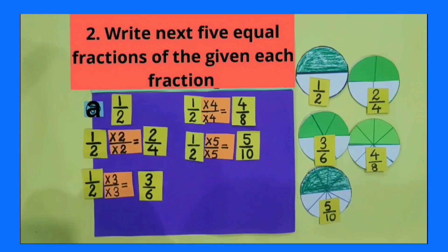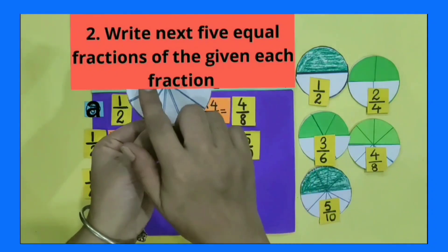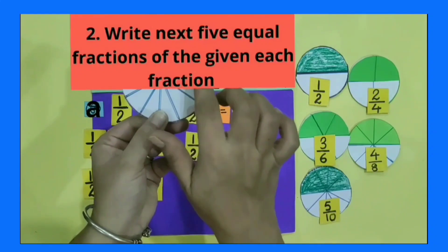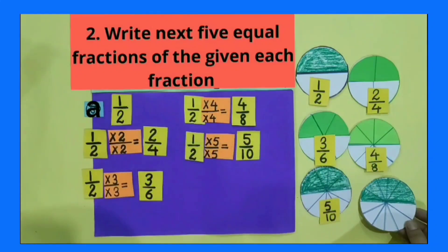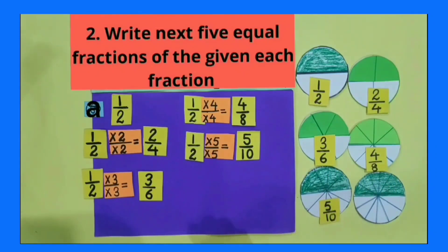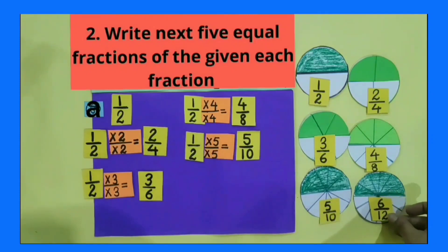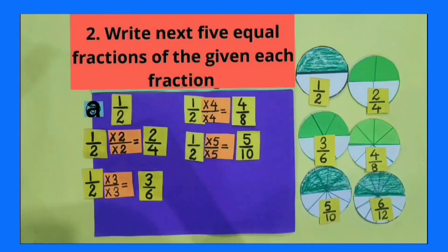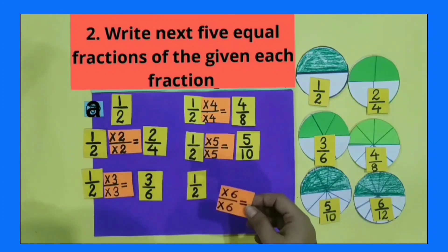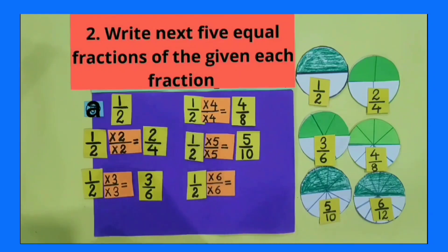I have a circular shape which is divided into 12 equal parts, and out of 12 equal parts, 6 parts are colored. Again compare all these shapes — are these shapes equivalent to each other? Yes, all the shapes are equivalent to each other. 6 parts out of 12 equal parts means 6 by 12. Tell with which number will I multiply 1 by 2 to get 6 by 12? Yes, I will multiply 1 by 2 with number 6. 1 by 2 multiplied by 6 by 6 is equal to 6 by 12.